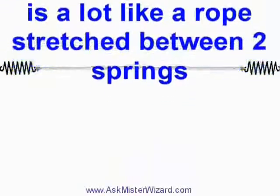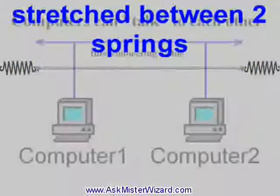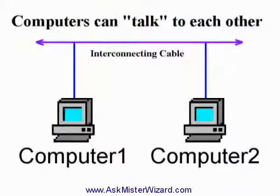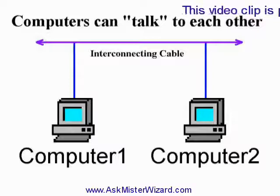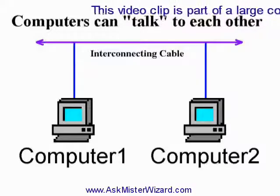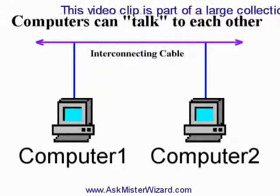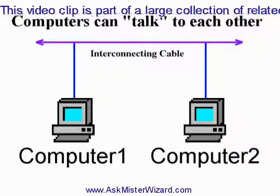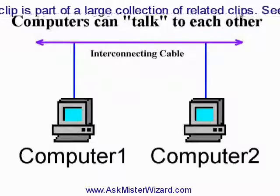It didn't take very long after computers were invented before scientists realized that they could do amazing and useful things by connecting two or more of them together and letting them send messages to each other. That way they could share their work, or they could share their printers, they could share disk drives and other resources.